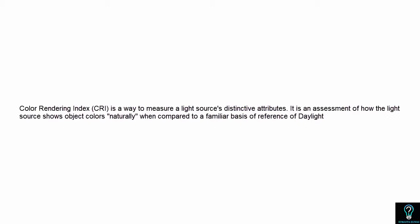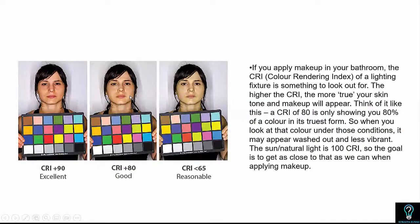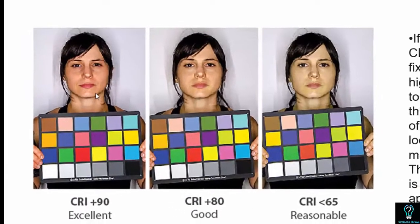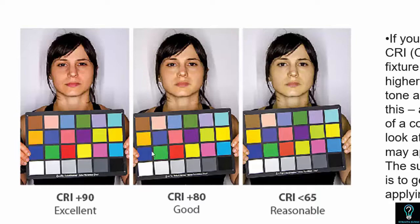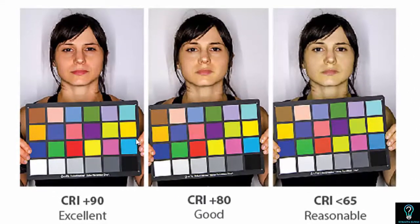True colors are visible in sunlight, and natural light is 100 CRI. Fixtures should be close to that to show exact color tones. Here is an example of how a person's face appears under different CRI values. At CRI 90 — excellent — it is more natural and the color palette is in its true form. At CRI 80 it is good but you can see a slight difference in color tone. At lower CRI values it is bad and very far from natural light.